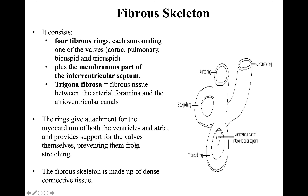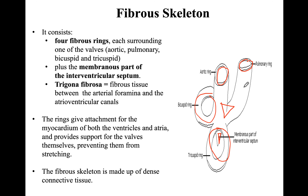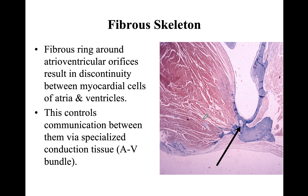The fibrous triangle separates the aortic and pulmonary rings from the right and left atrioventricular valves. To summarize: we have the fibrous rings around the valves, the fibrous tissue in the interventricular septum separating the right and left ventricles, and the fibrous triangle between the aortic/pulmonary rings and the atrioventricular valves. A special stain slide shows this connective tissue in the area of the fibrous ring separating the atrium from the ventricles.